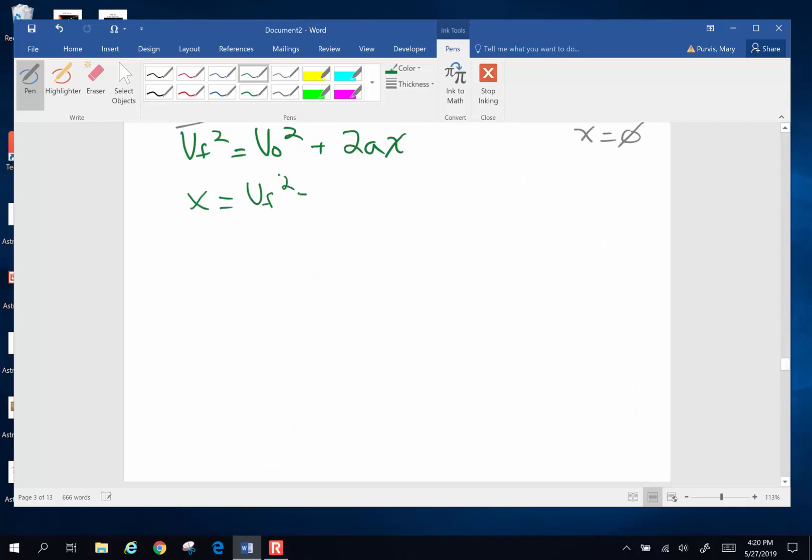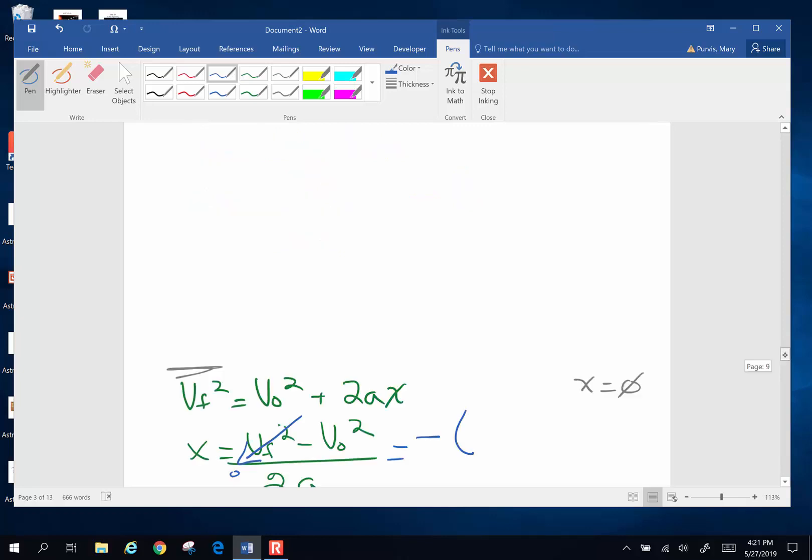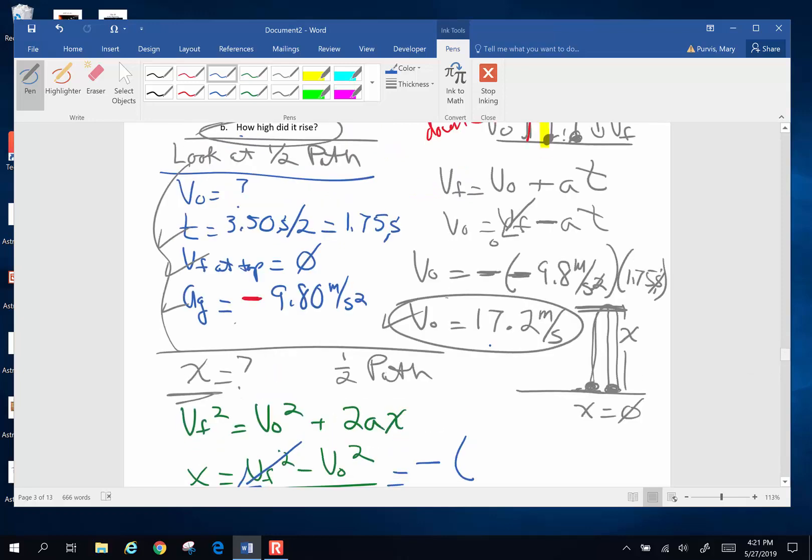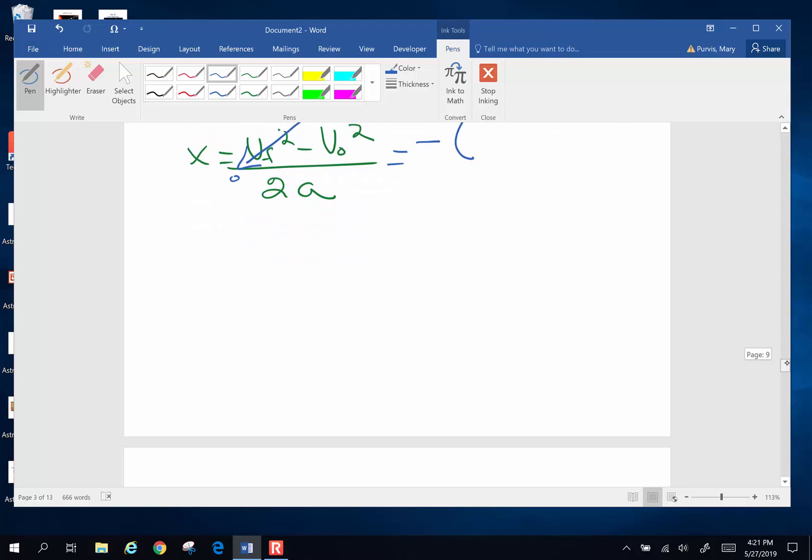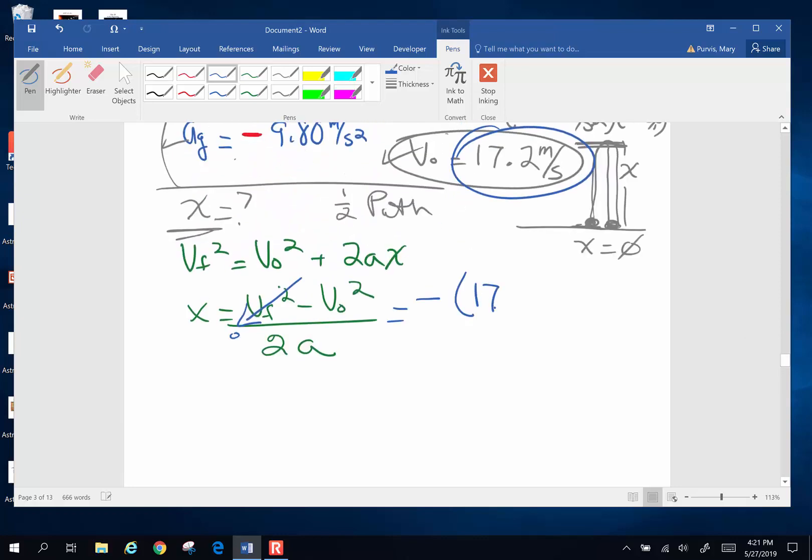X is final velocity squared minus original velocity squared divided by 2A. Final velocity at the tippy top is zero, so that goes away. Negative original velocity when it left his hand, what did we just solve for? Well we just found that that's 17.2 meters per second. So I'm going to put that number in, slide my page down a smidge. X equals, and this is that negative sign, 17.2 meters per second squared. And you'll notice this negative sign is outside of this squared.